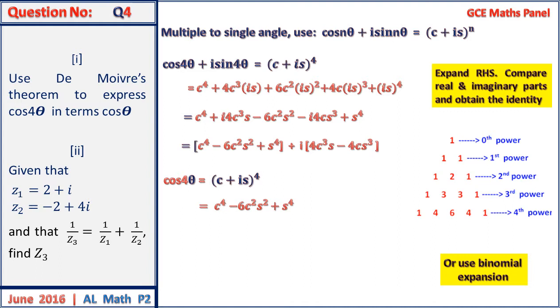So we further use other identities to simplify this, knowing that sin²θ equals 1 minus cos²θ. And when we simplify, our final answer will be 8cos⁴θ minus 8cos²θ plus 1.